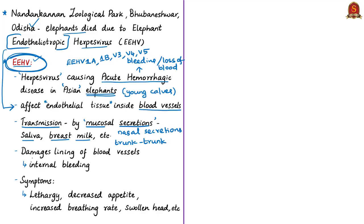The virus causes damage to the endothelial tissue or the lining of small blood vessels, primarily the capillary vessels. As a result, blood starts to leak out of the vessels, leading to progressive blood and fluid loss. When this damage worsens, the heart starts to pump less efficiently and ultimately it leads to the death of the elephant. The way this virus attacks elephants is similar to how the Ebola virus attacks human beings — Ebola is also a hemorrhagic virus.